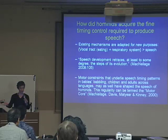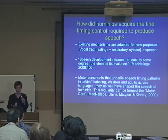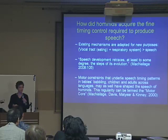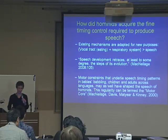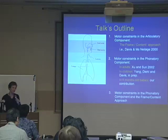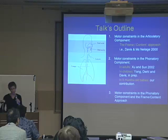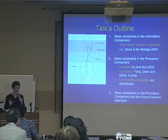What we are going to focus on are the motor constraints. We are going to study the motor constraints that underlie speech timing patterns in babies, children, and adults across languages, and we think that since they shape the speech of all these populations, they may well have shaped the speech of our ancestors. The talk will consider how the frame content theory, approached by Davis and MacMillage, explains how motor constraints shape speech in the oral cavity — this is the frame content approach.